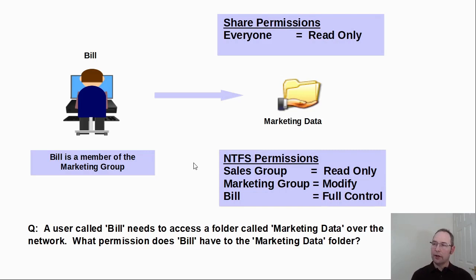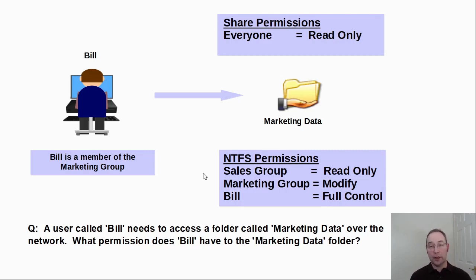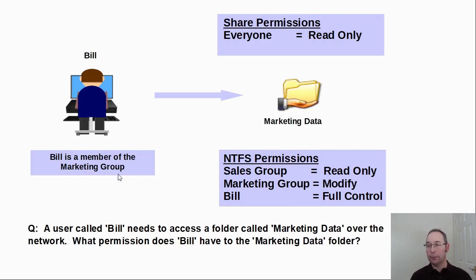If we take a look at the diagram we can see that we have NTFS permissions and we have share permissions. Now the NTFS permissions read: the sales group have read only permission assigned to them. Bill isn't a member of the sales group so we can disregard that. The marketing group have modified permission. Now Bill is a member of the marketing group so we know that Bill has been assigned modified permissions so far.